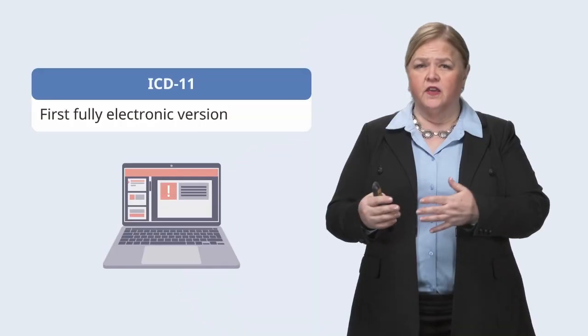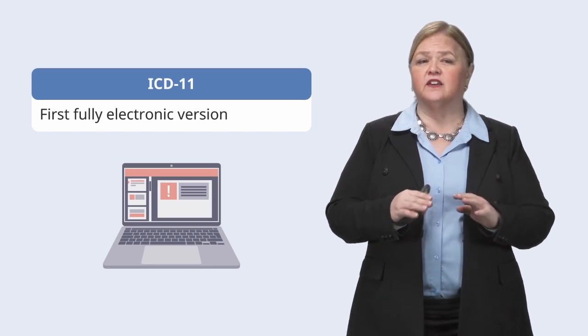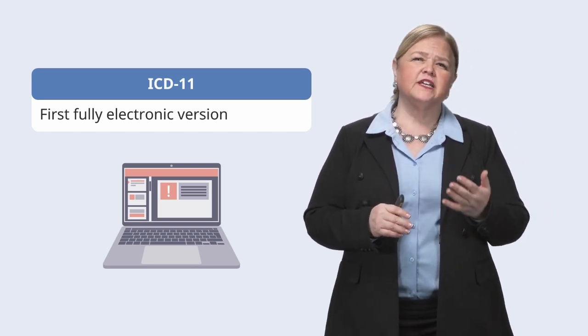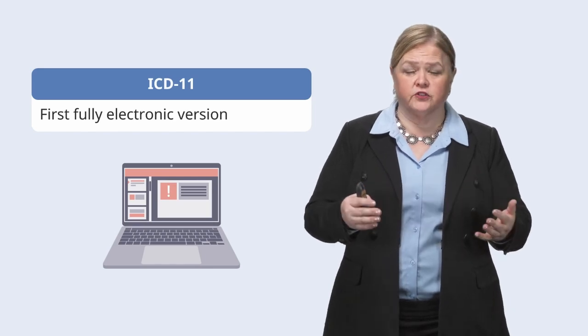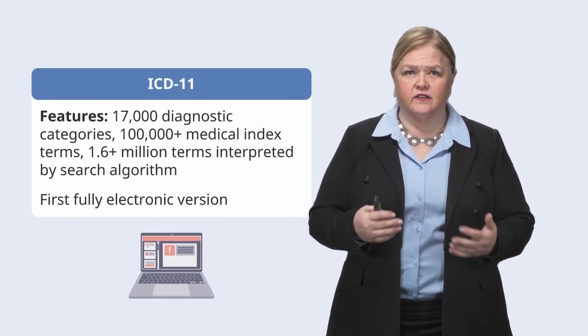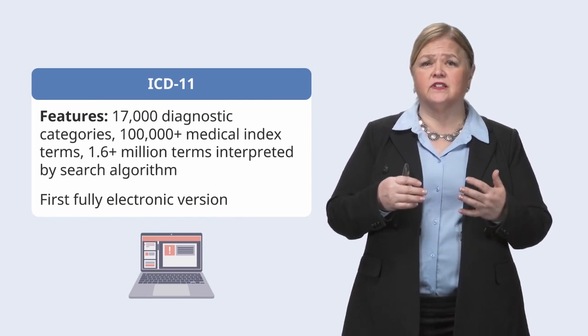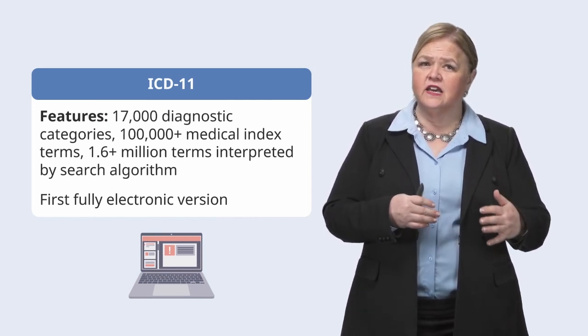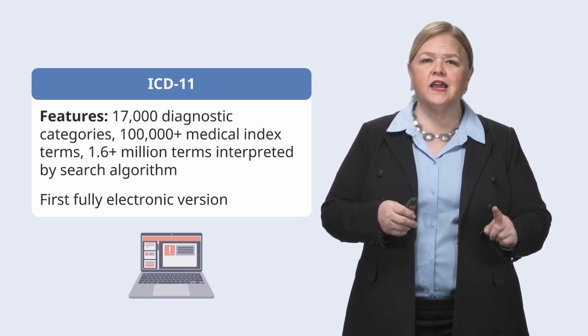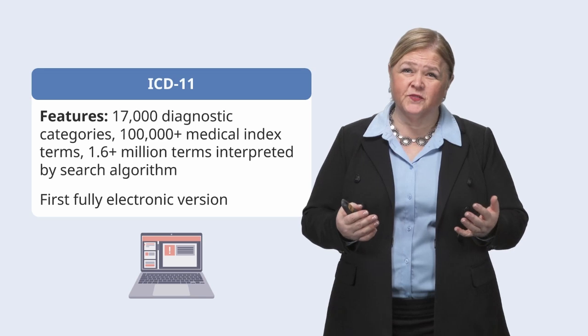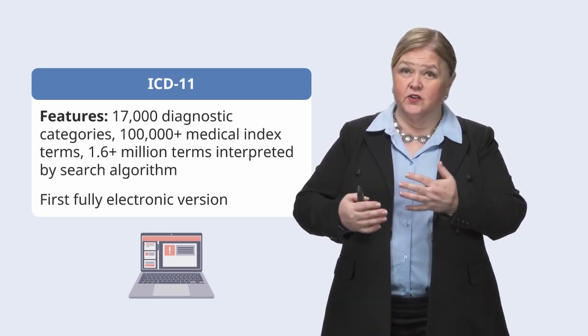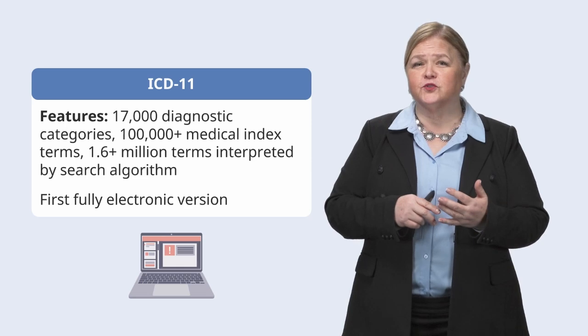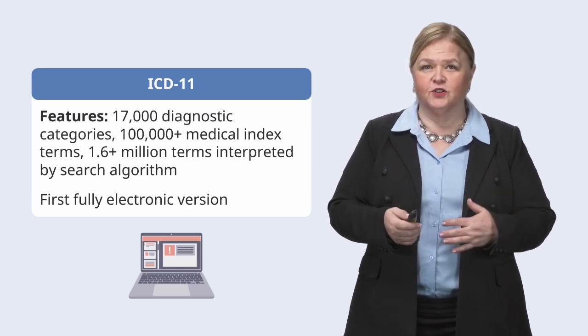Let's talk a little bit about ICD-11 — you're probably wondering what's the difference between ICD-11 and ICD-10. The biggest thing is that ICD-11 is the first version that is fully electronic, which gives you some pretty cool ways to search using an electronic search feature. This version has access to 17,000 diagnostic categories, over 100,000 medical diagnostic index terms, and its index-based search algorithm interprets more than 1.6 million terms. When ICD-11 rolls out and the U.S. adopts it, you're going to have powerful search capabilities that should save you significant time when seeking out the correct codes.